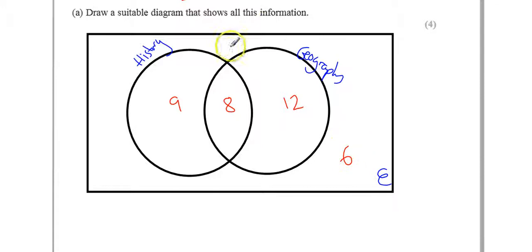Well, that's this bit here, isn't it? So, part B, the probability of neither history nor geography, is obviously going to be 6 out of our total, which is 35 for the whole class, isn't it? So, 6 out of 35. And that's it. That's how a Venn diagram works.